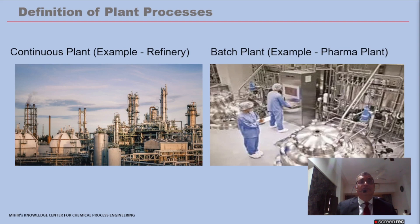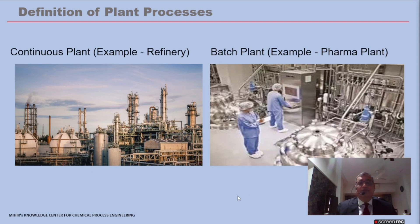We start with the definition of plant processes: a continuous plant such as a refinery, and a batch plant such as a pharmaceutical or small-scale industry plant. In a batch plant — for example a polymerization or pharmaceutical plant — batch reactions occur in the reactor, additives must be dosed batch-wise in a particular sequence, and this sequence must be captured in the notes section of the P&ID. In a continuous plant like a refinery, such notes may not be required since the plant operates 24 hours continuously.